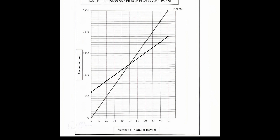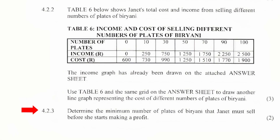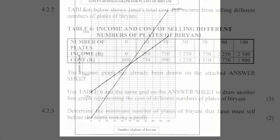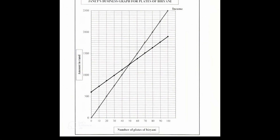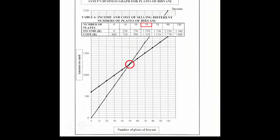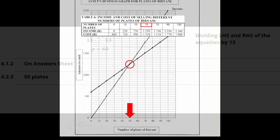4.2.3: Determine the minimum number of plates of biryani that Janet must sell before she starts making a profit. Using the graph or Table 6, we can see that the minimum number of plates Janet must sell before making a profit is 50 plates.